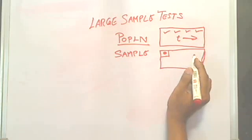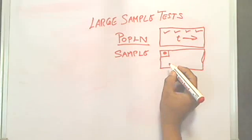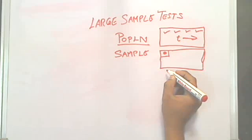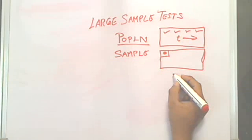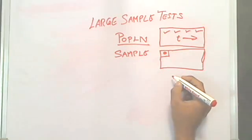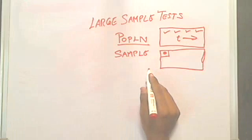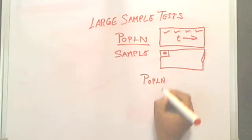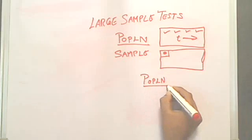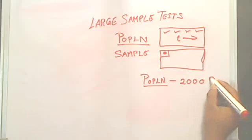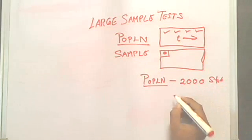For example, let's say I want to do a particular research in my college — I want to find out how many students know about large sample tests. In my college, if I consider the first PUC and second PUC students together, that comes to about 2000 students.